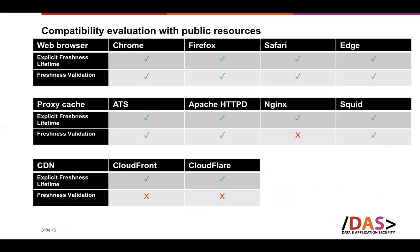We implemented CREMA in different programming languages and tested it with various real-world caches. For browser caches, we tested with Chrome, Firefox, Safari, and Edge, and found that our approach works well with all of them without needing to change the web browser — only the client and server need to be changed. We also tested with proxy caches like Apache Traffic Server, Apache HTTPd, Nginx, and Squid. Only Nginx has a problem with freshness validation, because Nginx does not update headers when the server sends a 304 Not Modified response.